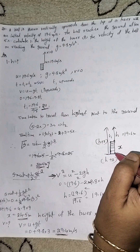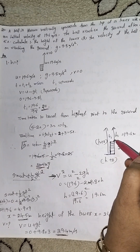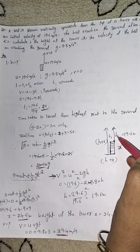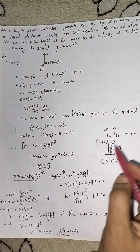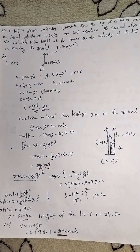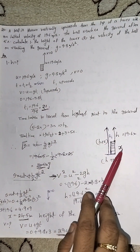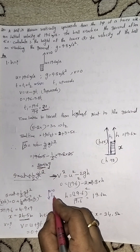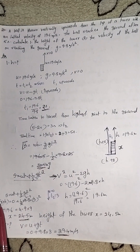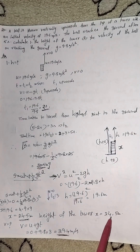Now we find X, the height of the tower. Using S = Ut + ½gt² in the downward direction: the total distance S equals X plus H. With U = 0, T2 = 3 seconds, and g = 9.8, we calculate X plus H. Since H = 19.6, we get X equal to 24.5 meters. So the height of the tower is 24.5 meters.